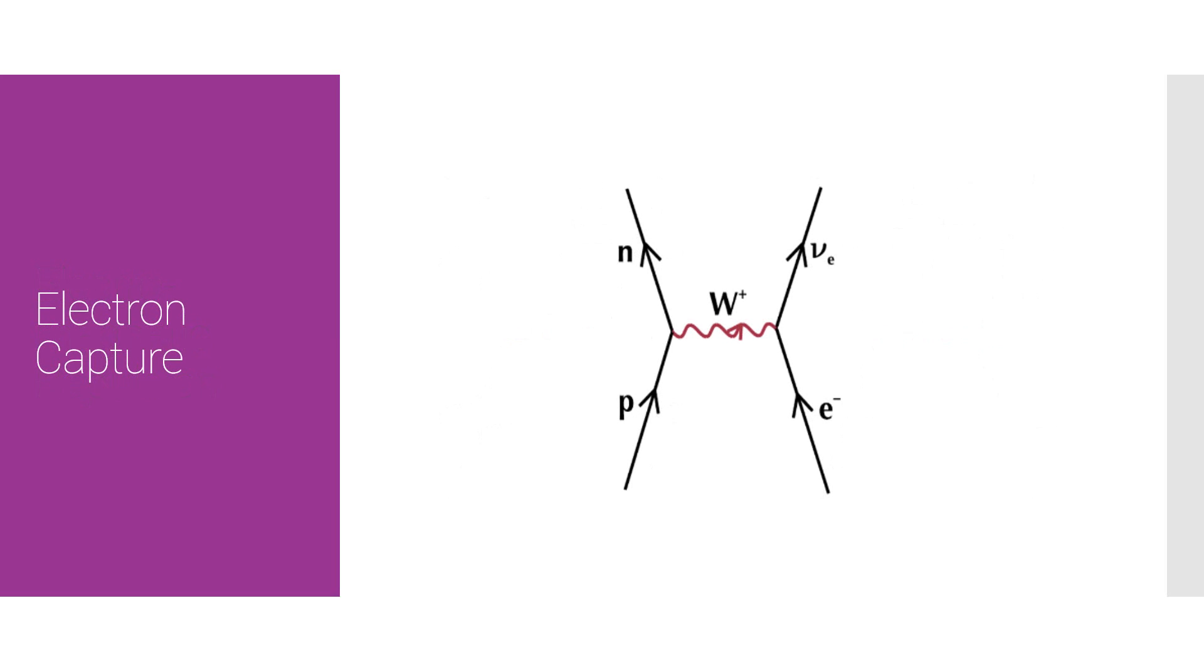In electron capture, a proton interacts with an electron. As you can see, it obeys the rule that baryons stay on one side and leptons on one side. The protons and neutrons are on the left side. The electron and electron neutrino are on the right side. But this isn't the electromagnetic interaction. As you can see, there are neutrally charged particles in there. So this is an example of the weak interaction.